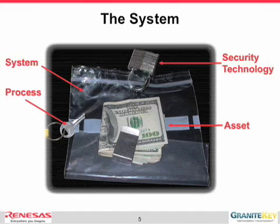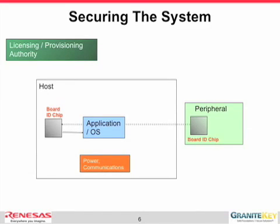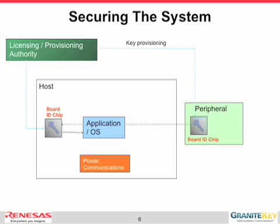So now let's take that analogy and extend it to a real system. Let's say we have a host and a peripheral — say the host is a PC and the peripheral might be a battery. We want to make sure we don't have any clone batteries in the system. From a technology point of view, we can take a BoardID chip and have keys stored in each chip — one on the host and one on the peripheral — and do an authentication. The security chip on the host will authenticate the chip on the peripheral and will refuse to operate if the peripheral does not have a proper chip in it. In the case of a BoardID chip, the chip cannot be easily cloned.